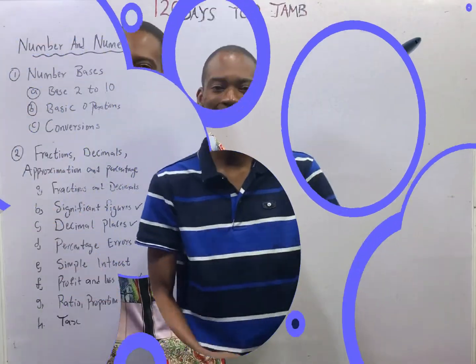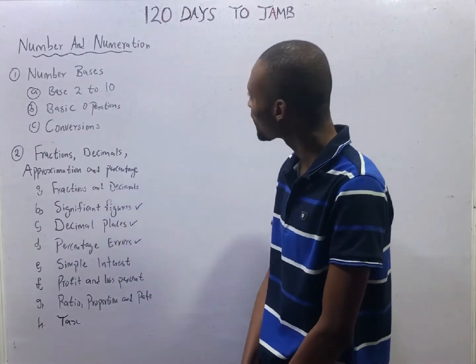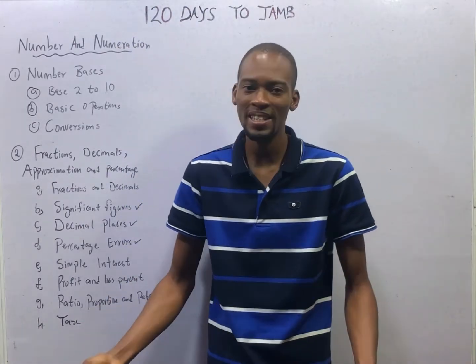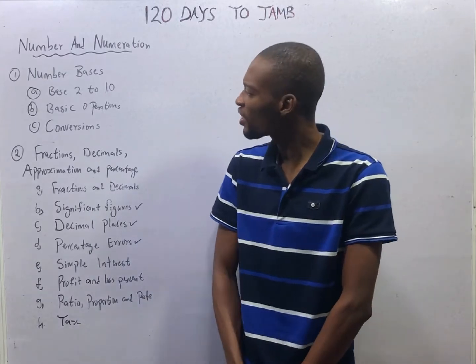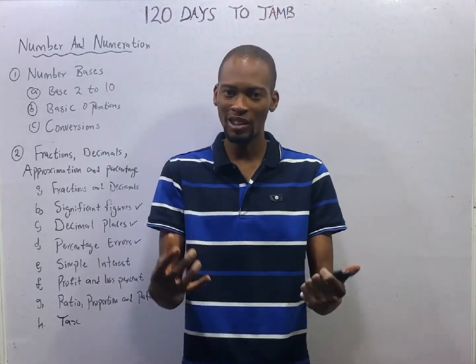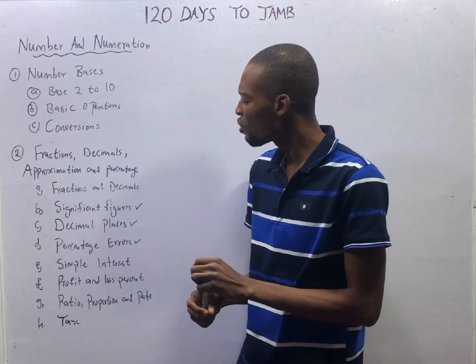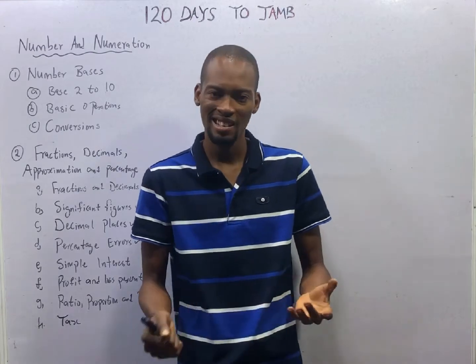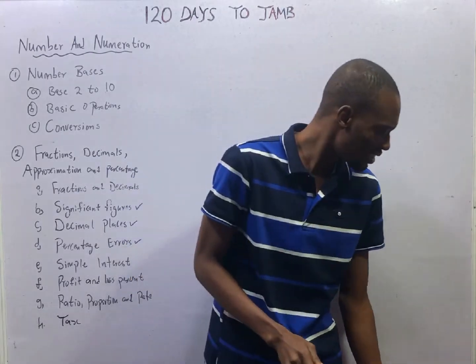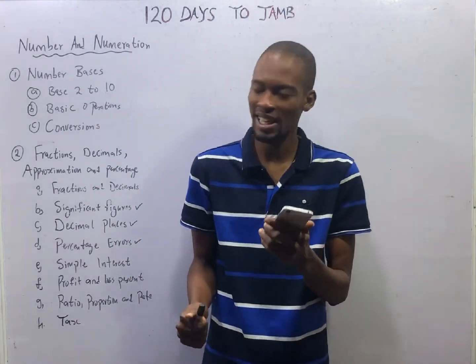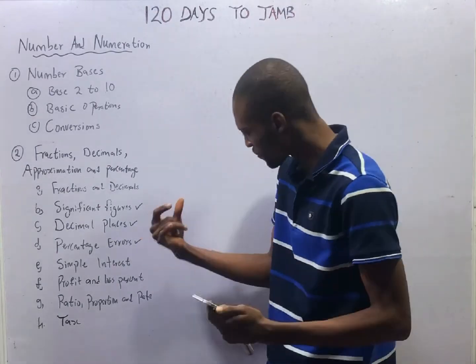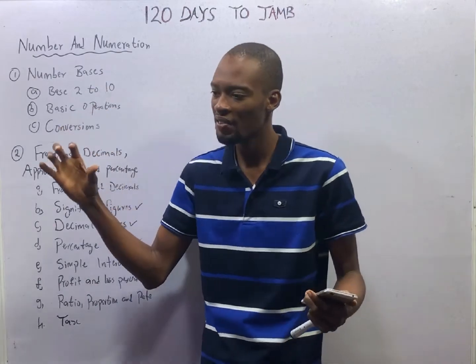Ladies and gentlemen, it is time to take off. This is episode 9 of more than 20 days to jump mathematics with Flash Isaac. So far, we've done much under number bases and we've also done much under profits and loss percent calculation. Let's look at a question that involves calculating profits and also involving number bases at the same time.